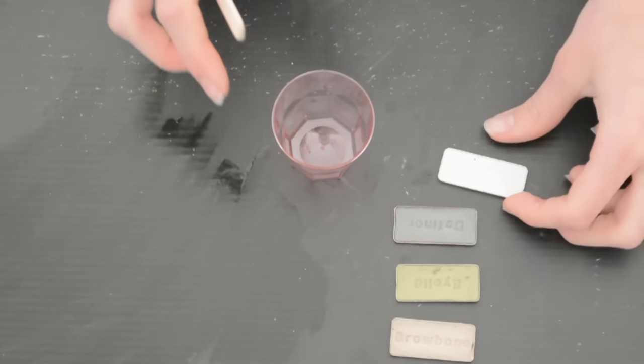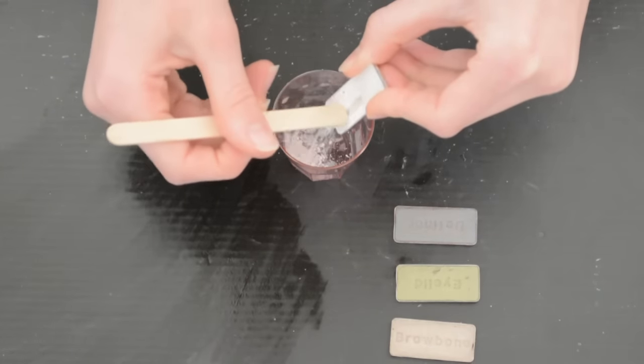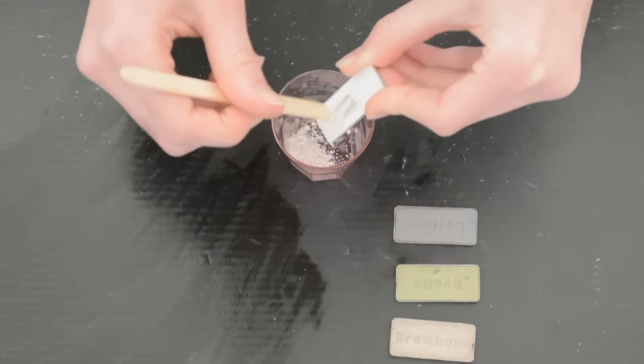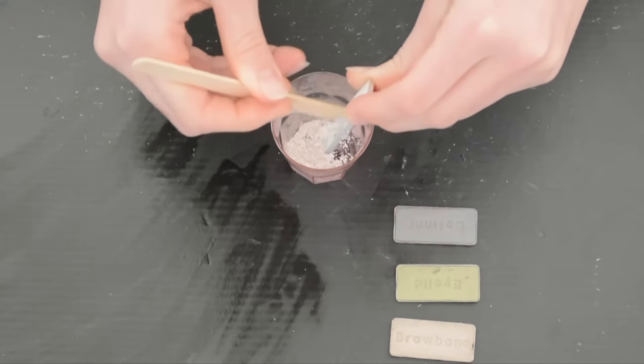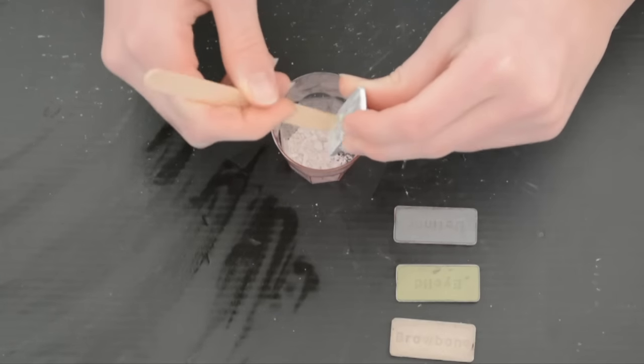So the first thing you're going to want to do is take a little cup and take the eyeshadows that you don't need. Like, we just need the pan. And you're just going to scrape out all of the eyeshadow that is inside. This can be a little bit wasteful if you think about it.